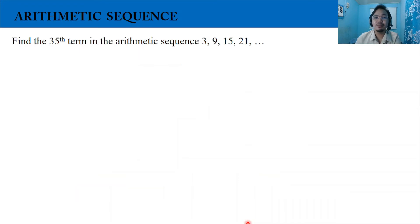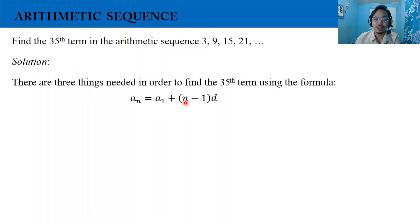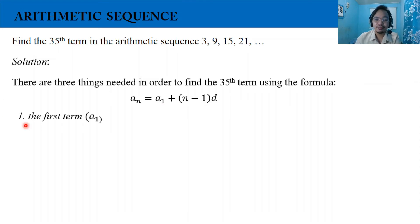Let's have Example 1. Find the 35th term in an arithmetic sequence 3, 9, 15, 21. For our solution, there are 3 things needed in order to find the 35th term using the formula a_n equals a_1 plus the quantity n minus 1 times d. The first thing: the first term, or a_1, is equal to 3.